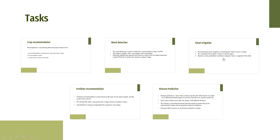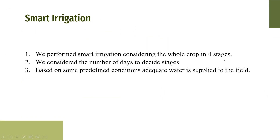Smart Irrigation: Over-utilization and under-utilization of water affects crop yield and leads to waste of water. To overcome this problem, a smart irrigation system was designed, which regulates irrigation according to the requirement of the crop in stages. We considered the entire paddy crop in 4 stages and defined conditions based on water level, soil moisture, and weather conditions. According to these conditions, the motor will turn on and off automatically.